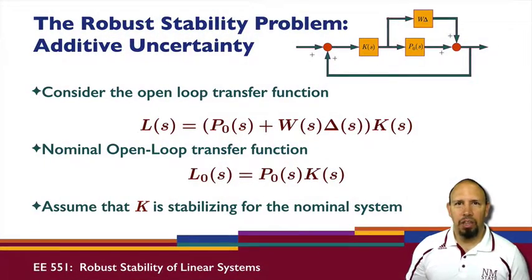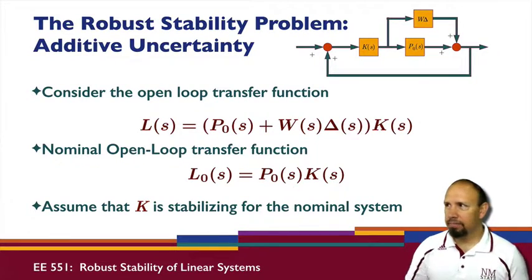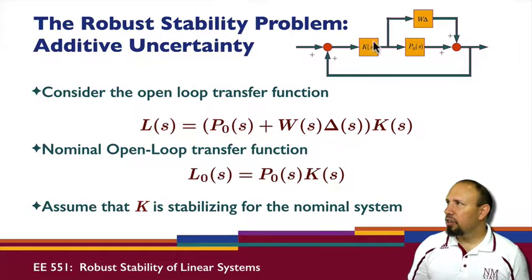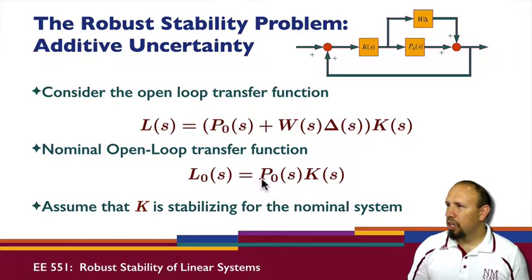Therefore, the one that we have, which is included in that set, will be guaranteed. That's the basic idea. In this particular loop, we consider what's called the loop transfer function, which is basically everything as you go around the loop, not including the loop as a loop. The nominal open loop transfer function L-naught is given by P-naught times K.